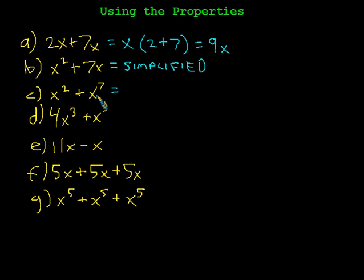And in the future maybe I'll just abbreviate that with a simp. x squared plus x to the 7th. Aha! This looks like two things I can add together. But no I cannot. Because this variable is to a different power than this variable we're not allowed to add them together. So this guy is already as simplified as it can possibly be.